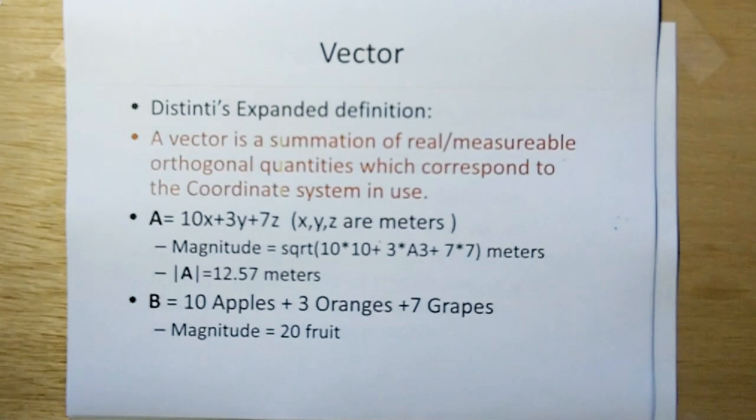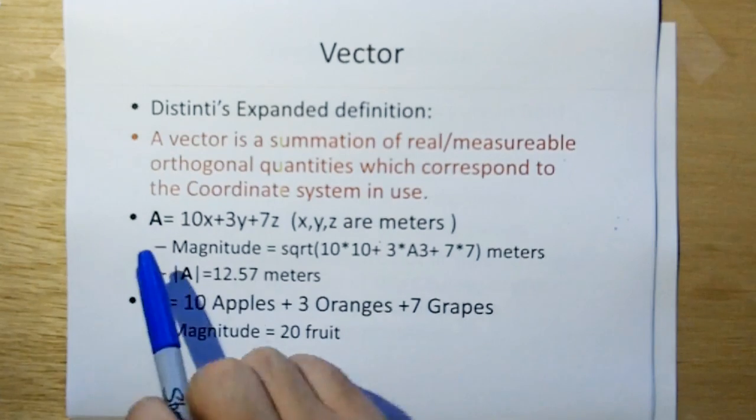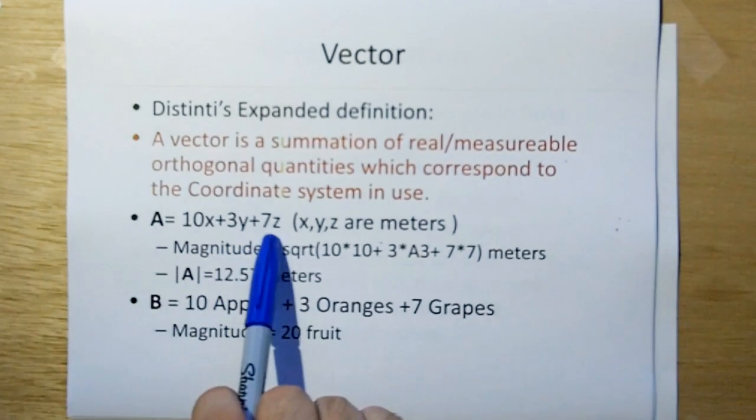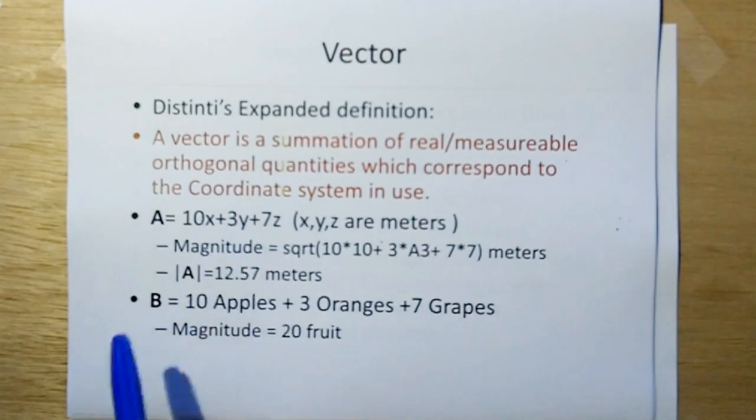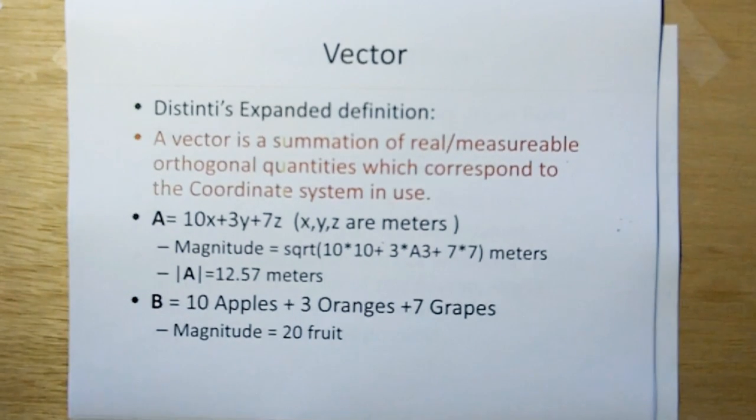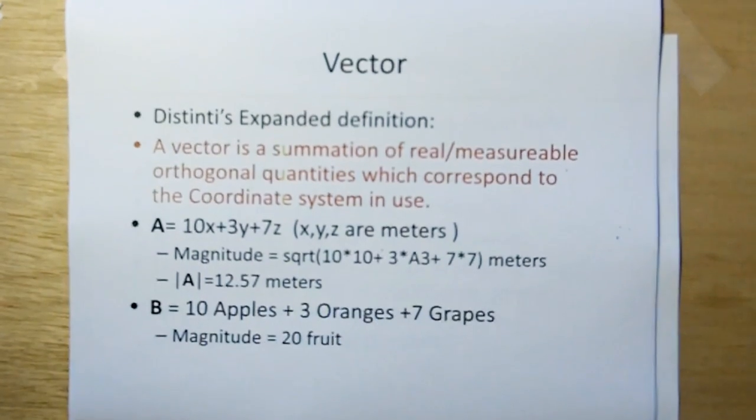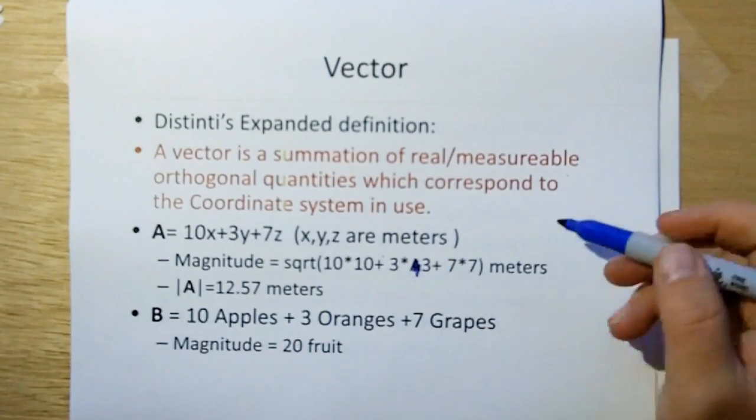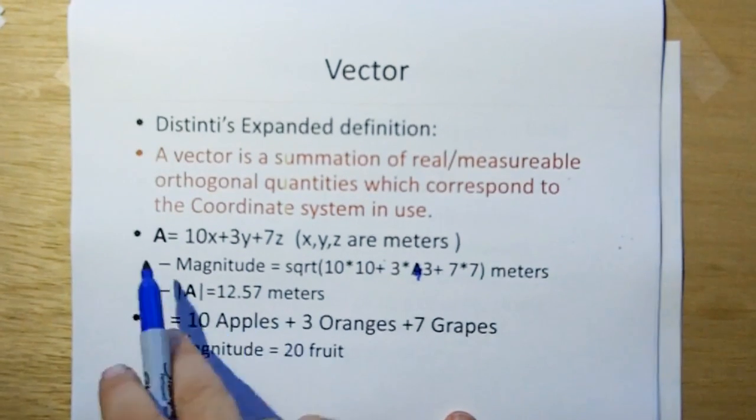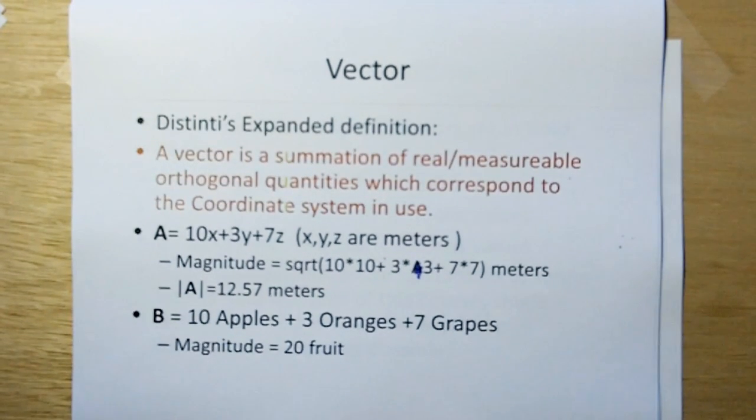Here's Distinti's expanded definition. A vector is a summation of real, measurable, orthogonal quantities which correspond to the coordinate system in use. Here's vector A, which we defined as 10x plus 3y plus 7z. X, Y, and Z are the orthogonal dimensions of the coordinate system that we're using. And X, Y, Z are here defined in meters. So the magnitude of A, if we take 10 squared plus 3 squared plus 7 squared, take square root of that in meters, we're going to get that the magnitude of A is equal to 12.57 meters.